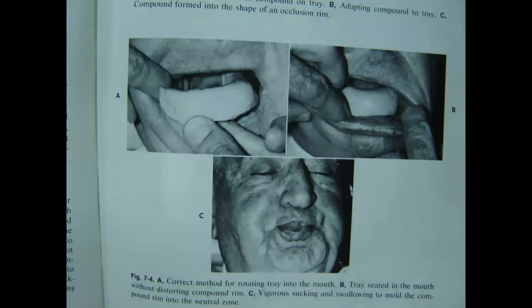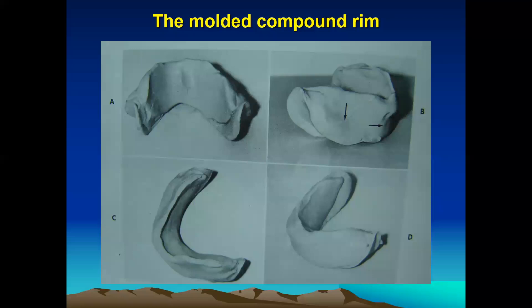In these diagrams we can see in the top left diagram that the compound rim is inserted into the patient's mouth, and in the last diagram we can see the various functional movements performed by the patient. This is the final molded compound rim showing the buccal view, lingual view, and all views.